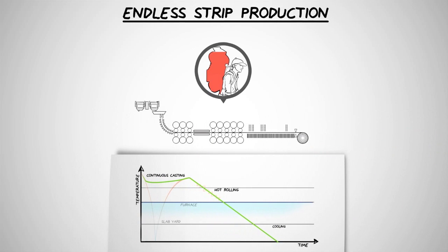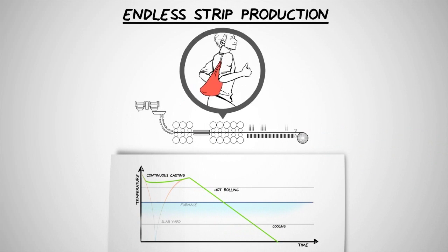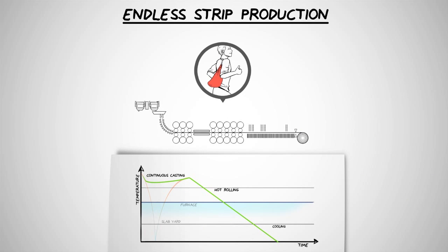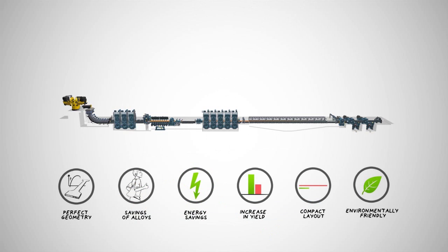With a total line length of just 180 meters, Arvedi ESP plants are considerably more compact than typical casting and rolling mill configurations.